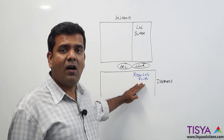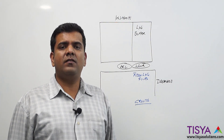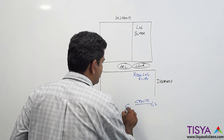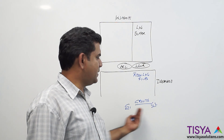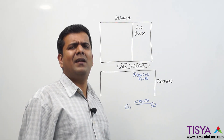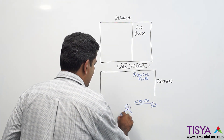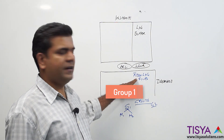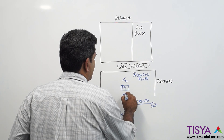Redo log files are organized in the form of groups. When we create a database we need to create a minimum of two redo log groups — let's say group one and group two. When we create a group we specify how many members each group is going to contain. In practical terms you will create every group with the same number of members. For example, group one with member one and member two — basically members become redo log files.